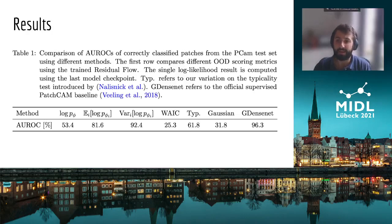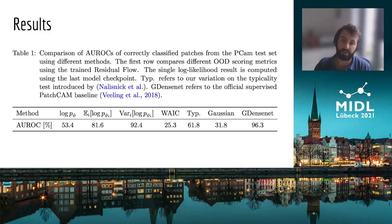More complicated outlier measures fall behind the easier ones, and even a simple Gaussian baseline that approximates the average colors of the image can achieve better performance than, for example, the WAIC.